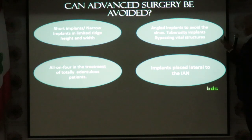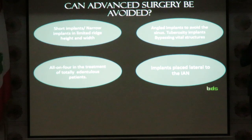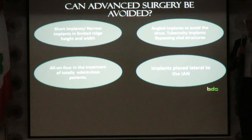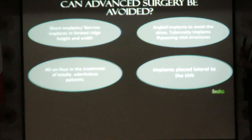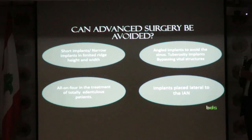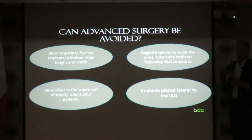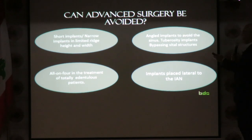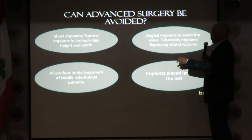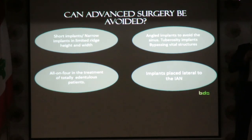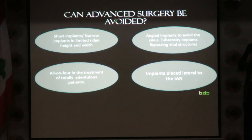Now, the question we ask is: can advanced surgeries be avoided? I'm going to present four different case scenarios. The first relates to short implants, narrow implants, and narrow implants in limited height or width. The second is the angled implant — can we use angled implants and still have good results to avoid the sinus? We need to go to the tuberosity to place the implant, bypassing this vital structure. The all-on-four procedure in totally edentulous patients is a very interesting technique, which I will very rapidly fly over.